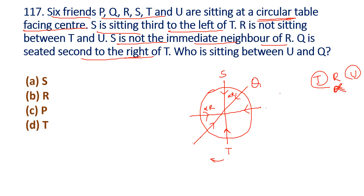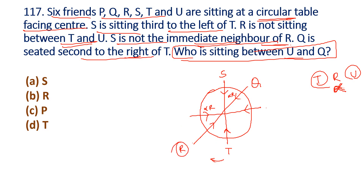U and Q — who is sitting between them? Let's place all clues: S is third to the left of T; R is not between T and U; S is not the immediate neighbor of R; Q is second to the right of T. Using these constraints, R cannot sit between T and U, so we determine R's position automatically, which tells us where U sits.